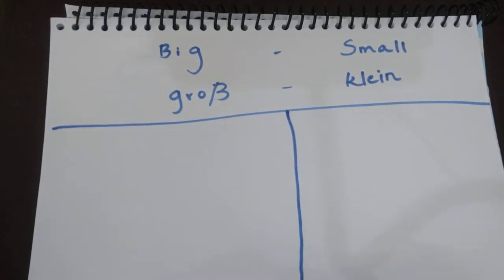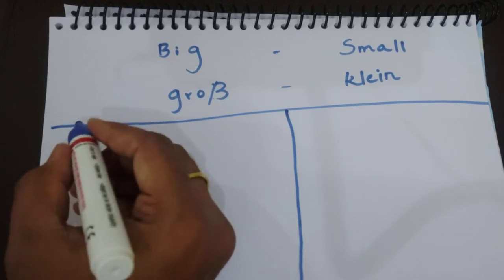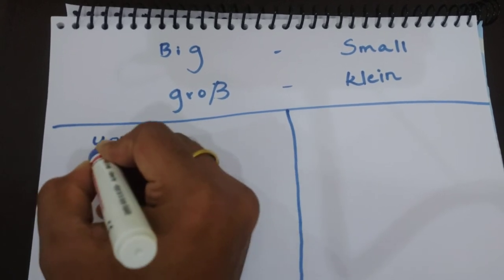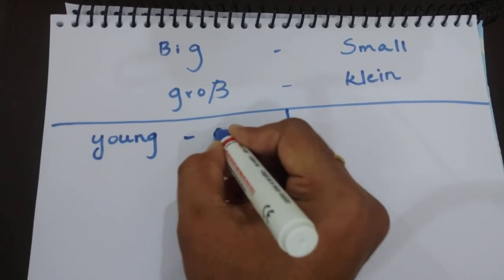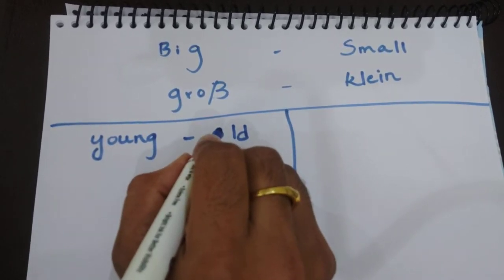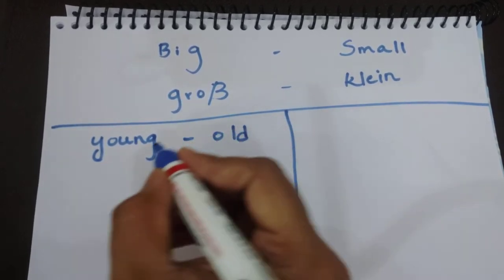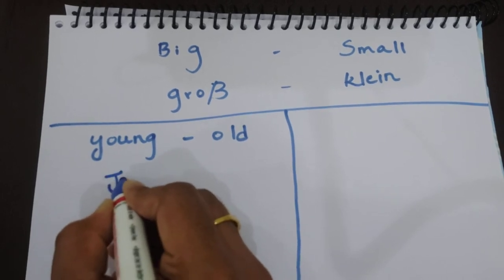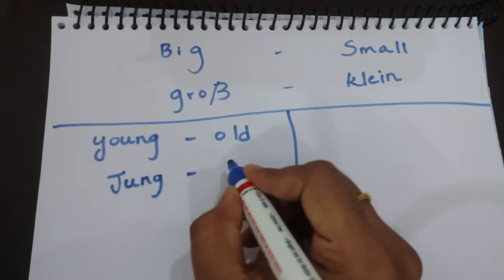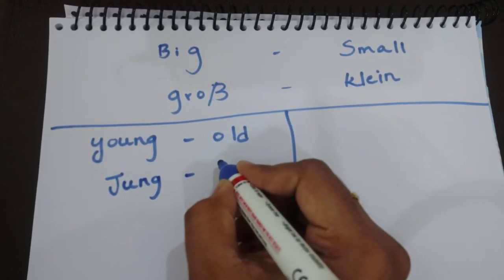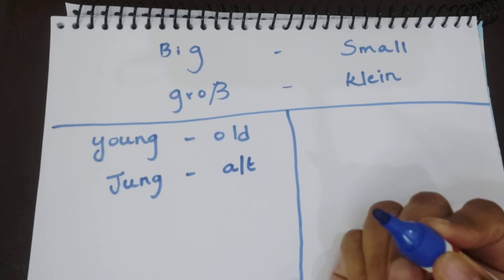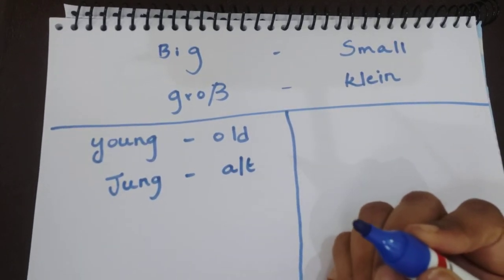Okay, so next: young and old. The opposite of young is old. In German, young is 'jung' and old is 'alt'.